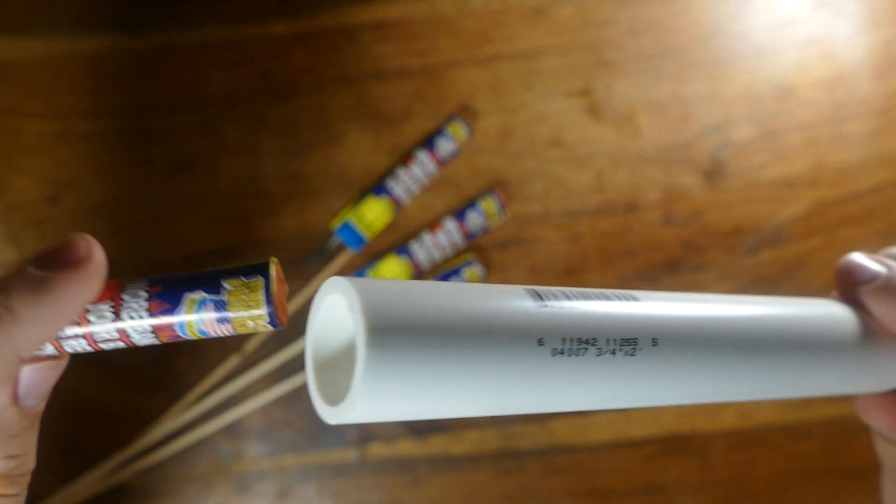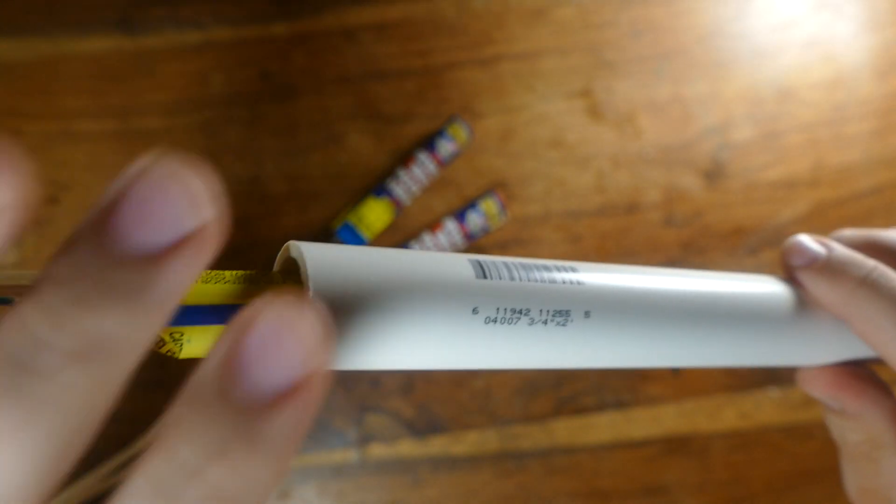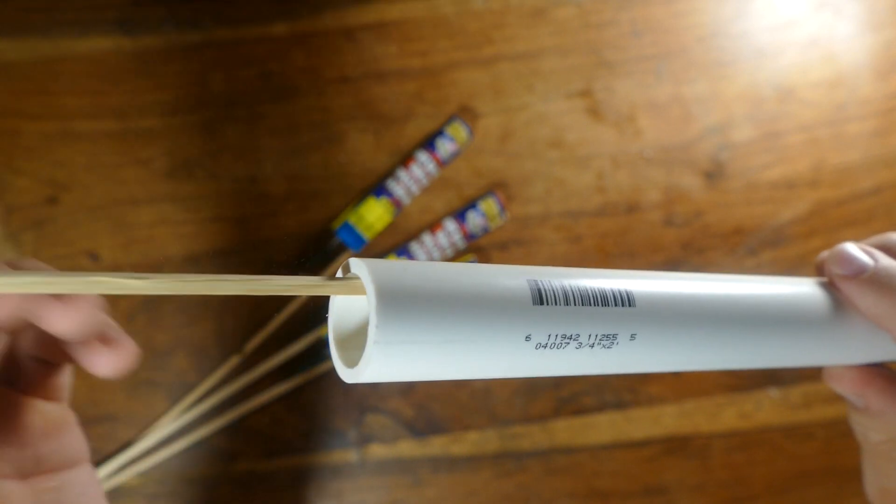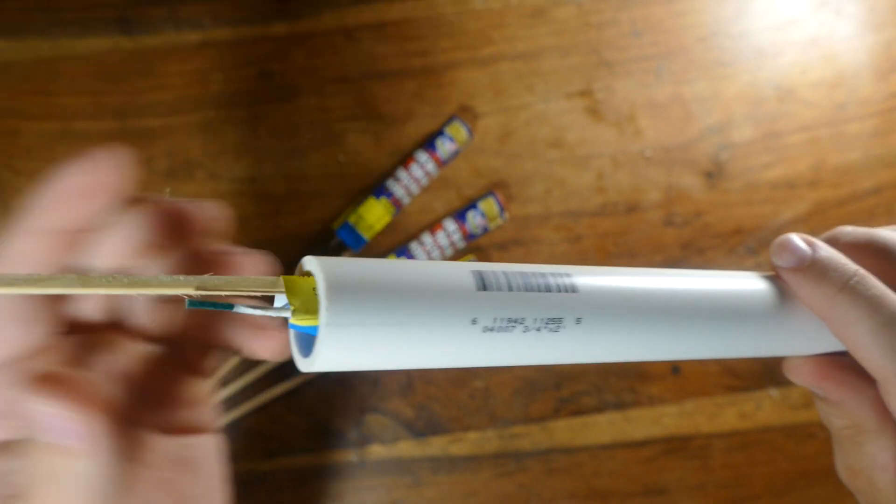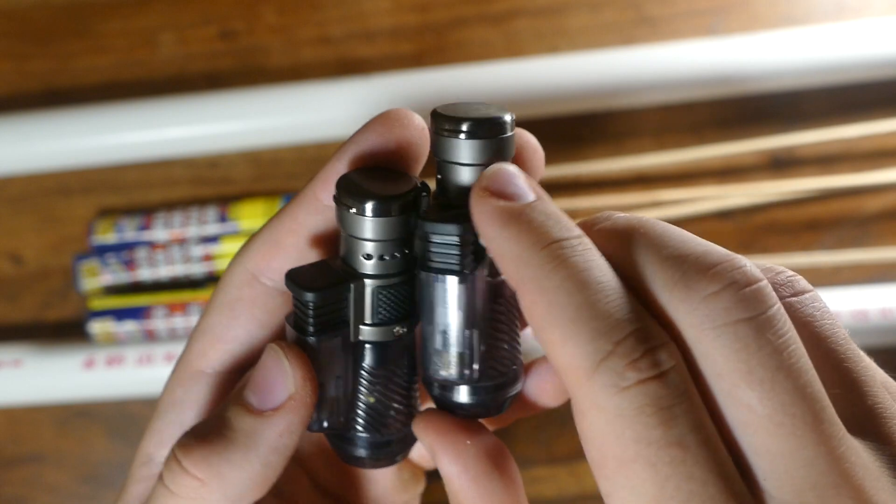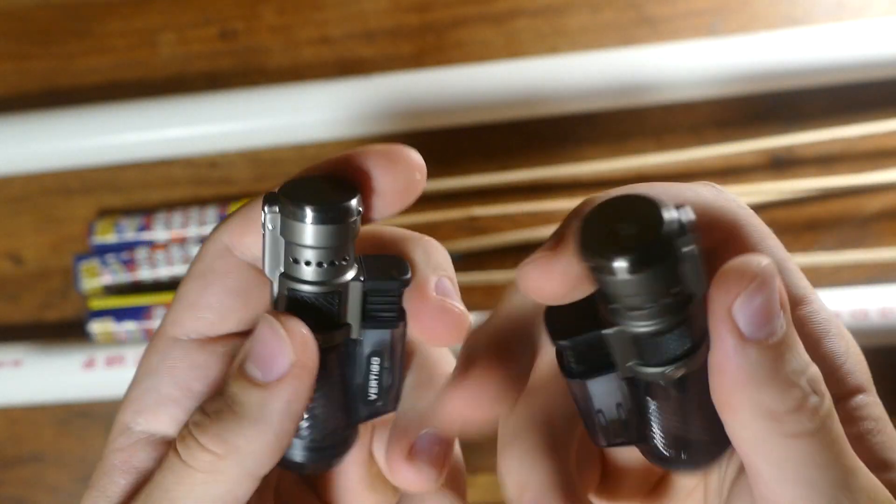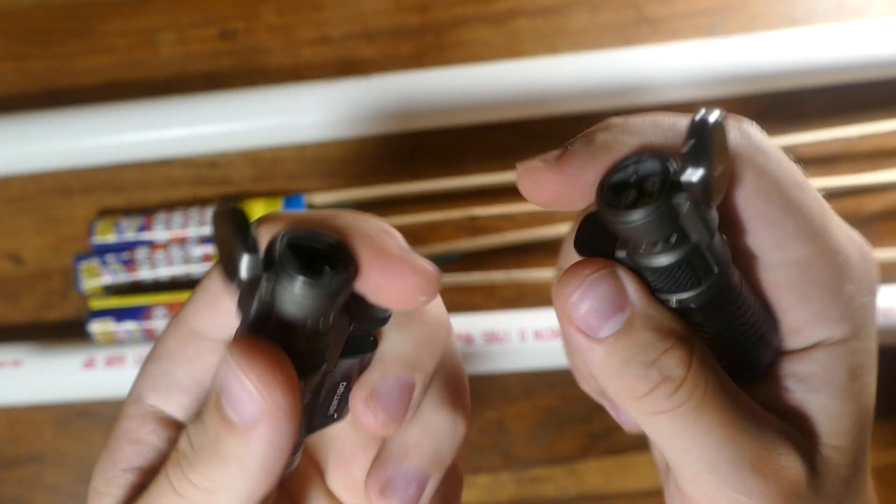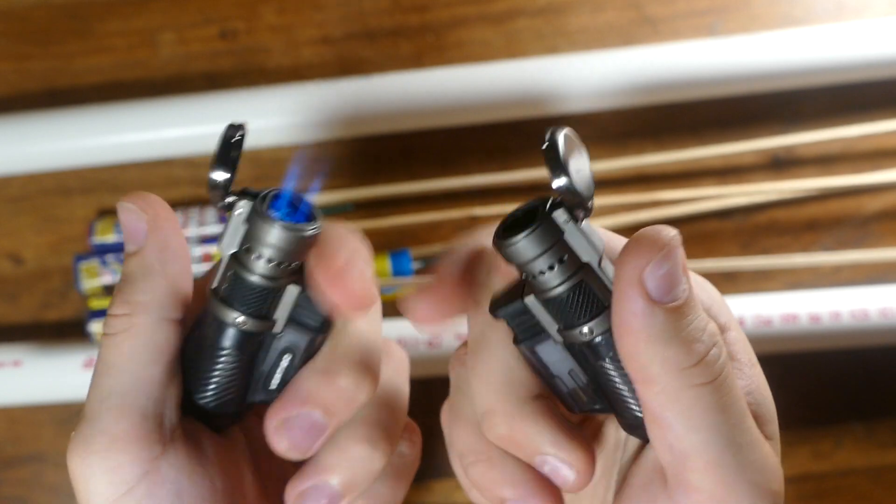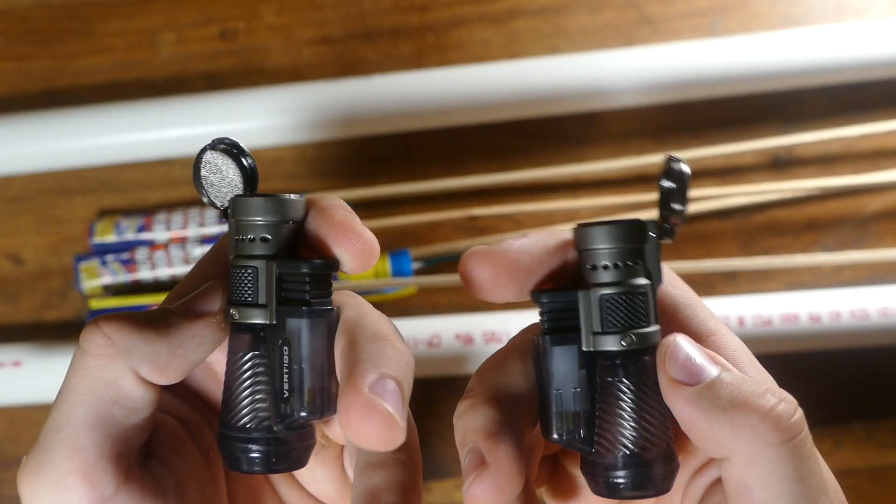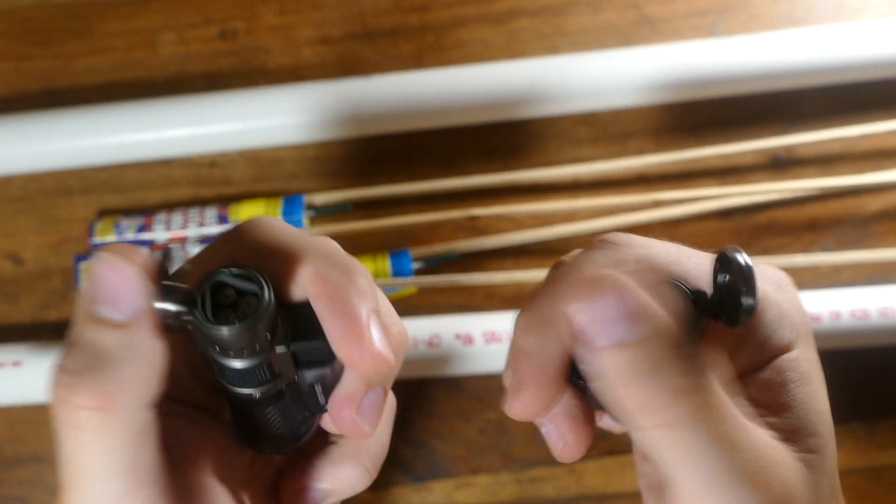So as you can see, these bottle rockets fit pretty well right down the barrel. It's a pretty loose fit, but at the same time, it's not just a gaping hole. And then for the ignition system, I'm going to be using these two jet lighters. They're pretty cool, they work pretty well. They're not very expensive either, so I'll link them in the description if you guys want to go check them out.